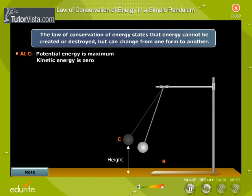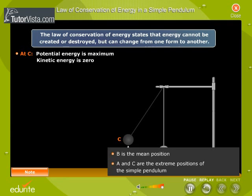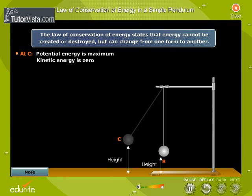When the pendulum moves towards position B, its velocity increases. Due to increase in velocity, its kinetic energy increases. That is, potential energy gets converted to kinetic energy.